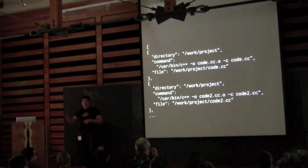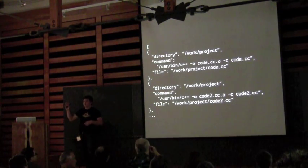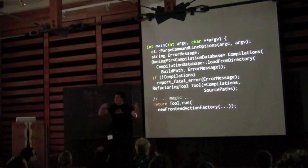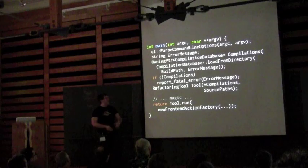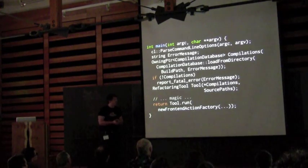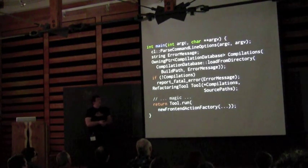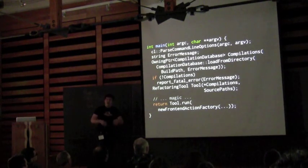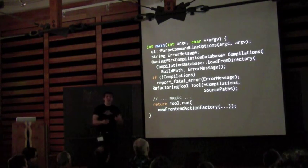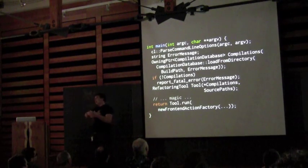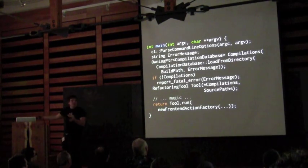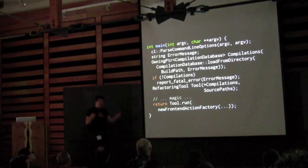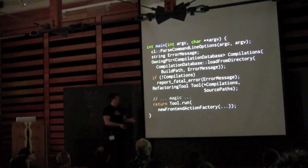Once we've got the compilation database loaded and we understand how to compile your source code, we build a RefactoringTool. It's just a driver that manages going off, running all of Clang's infrastructure, compiling the necessary source code, building ASTs, and running your tool over them.